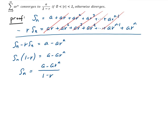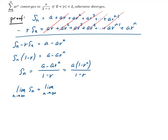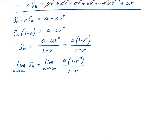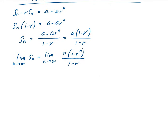From here, we can factor out A, so S of N equals A over 1 minus R, times the quantity 1 minus R to the N. Now we're going to take the limit of this as N goes to infinity. A over 1 minus R is a constant — it doesn't depend on N — so we can take that outside the limit. We have 1 minus R to the N, and we need to look at this case by case.